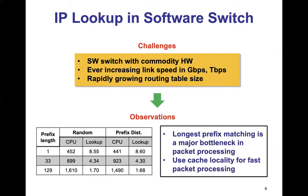To gauge how much impact this growing routing table size has on IP lookup, we ran a simple experiment, as shown in the table on the bottom left corner. The table clearly shows that as the number of prefix lengths increases — meaning the table grows — significantly more CPU cycles are needed, and thus lookup rates are adversely impacted. In light of these challenges and experiments, we have two observations: first, longest prefix matching is indeed a major bottleneck in packet processing; and second, cache locality can be utilized for fast packet processing.